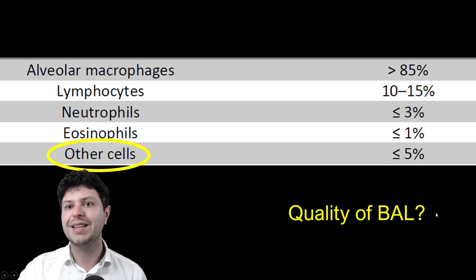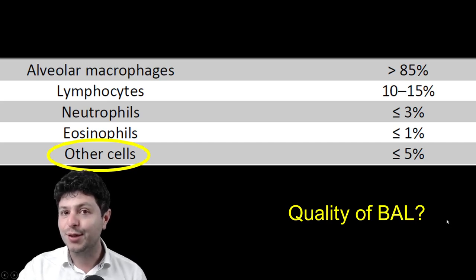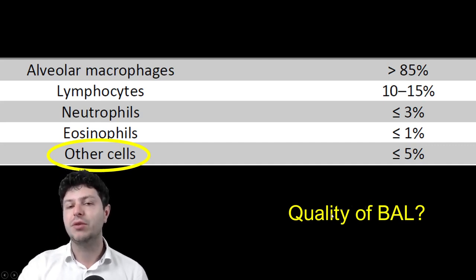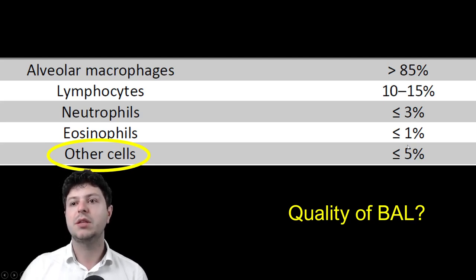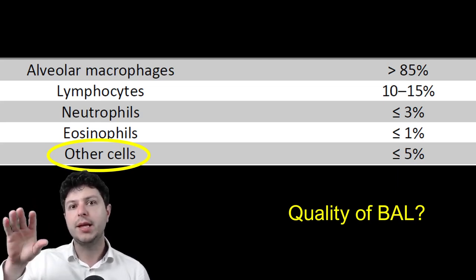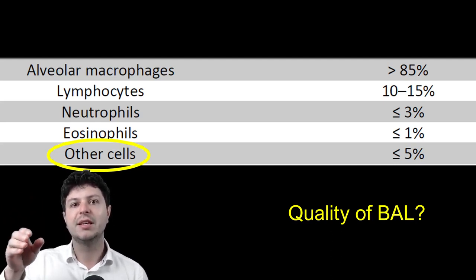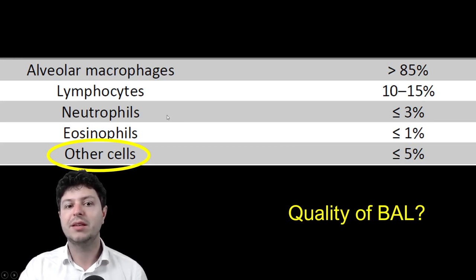You need to have a true lavage. Sometimes clinicians who do not work in the field of ILD think they're doing a bronchoalveolar lavage, but they're actually doing a bronchial wash — and there's a big difference. If you are collecting a lot of other cells in the BAL, like 15–20% other cells, that is a bronchial wash. It means you've collected bronchial cells from the lining of the airways but haven't obtained a sample of fluid from the depths of the lung.